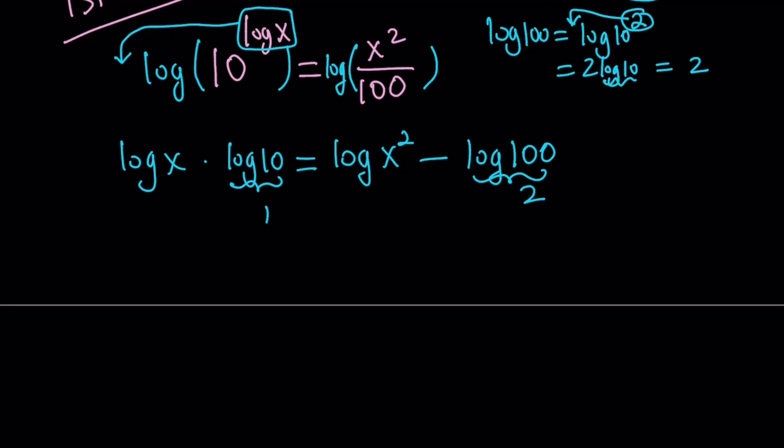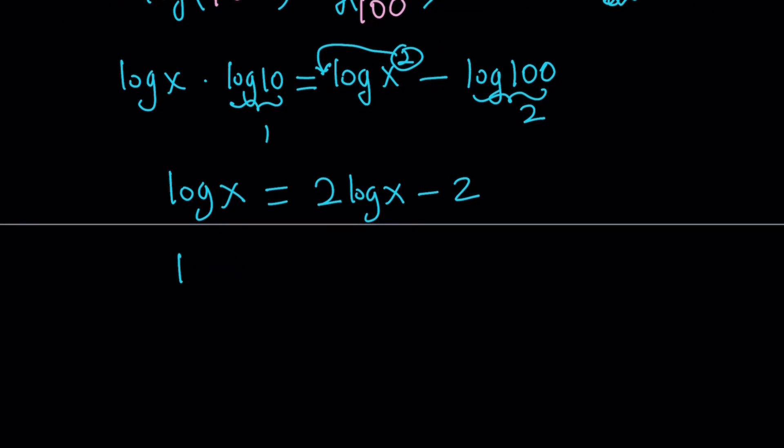So we get something nice. Log x times 1 is log x. And then here, using the power property again, that becomes 2 times log x minus 2. Put the log x's on the same side. You get log x, and put the negative 2 on the right-hand side, and you get log x equals 2.